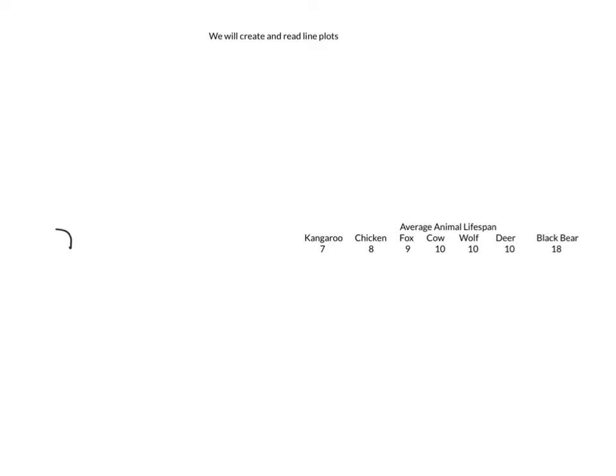So let me give you an example. Here we have some data of average animal lifespan and as I look at this data I notice my lowest number is a 7 and my highest is an 18. So I'm going to make a number line to put this information on. I'm going to have my number line start at 5 and go to 20.